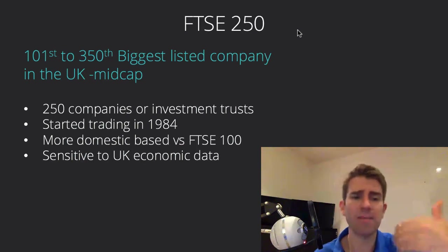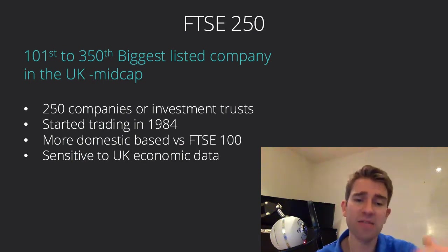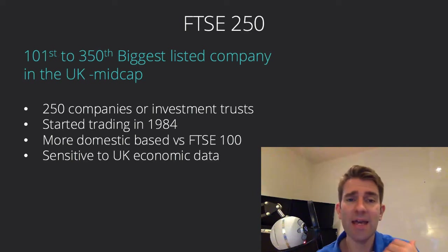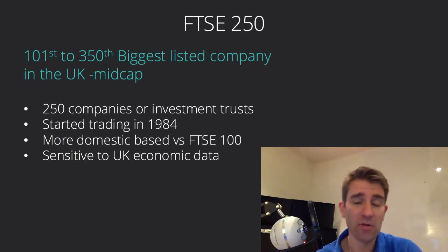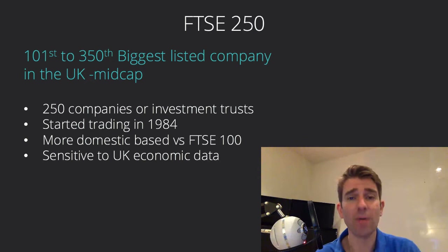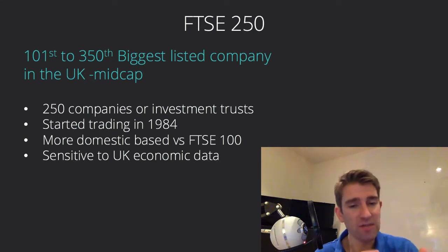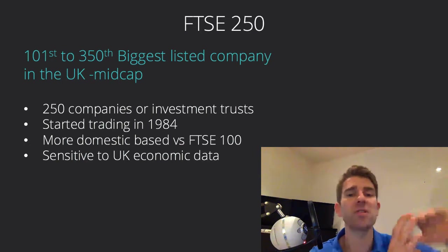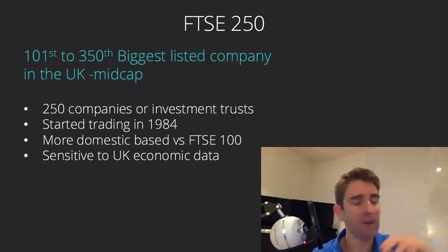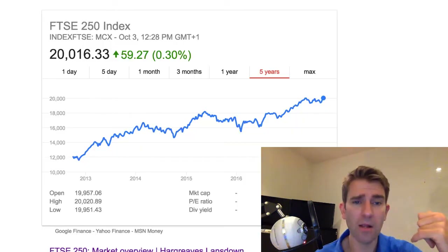The FTSE 250 is more domestically based, starting in 1984. It's sensitive to UK economic data, to interest rates, and to the pound — because these companies import and export, which affects currency and manufacturing costs.